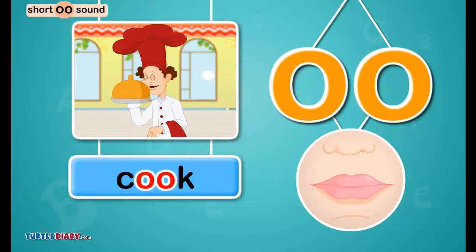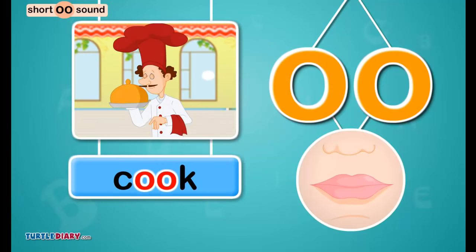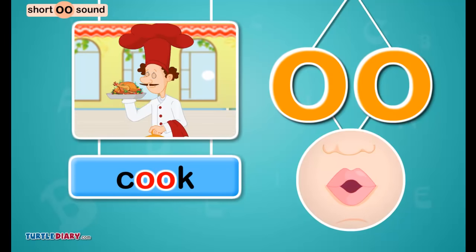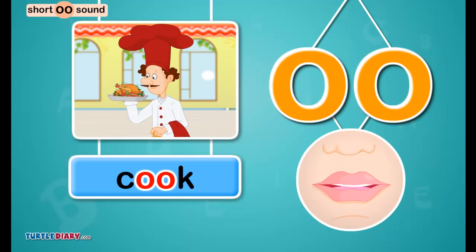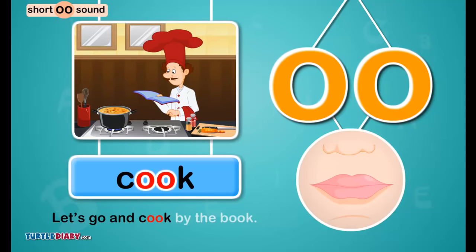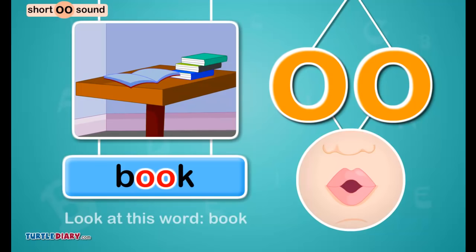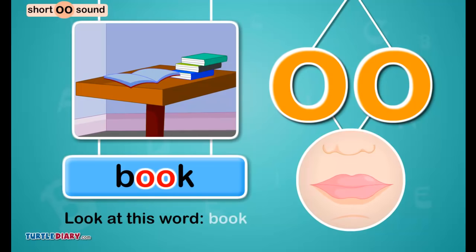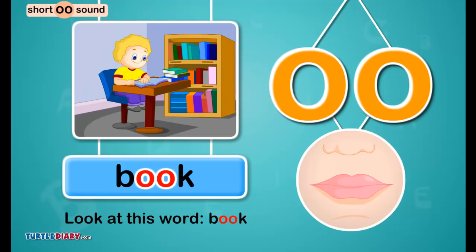O-O in cook sounds ʊ. Let's go and cook by the book. Look at this word: book. The letters O-O in book make the ʊ sound.